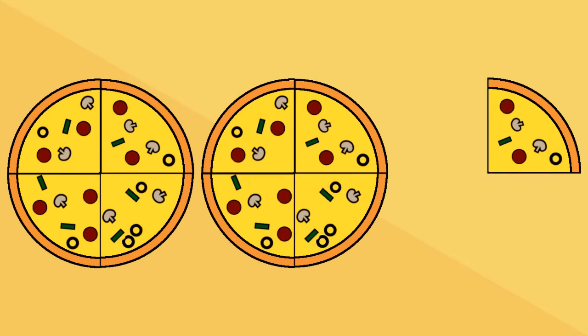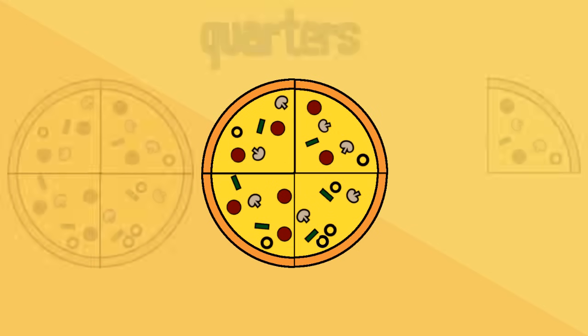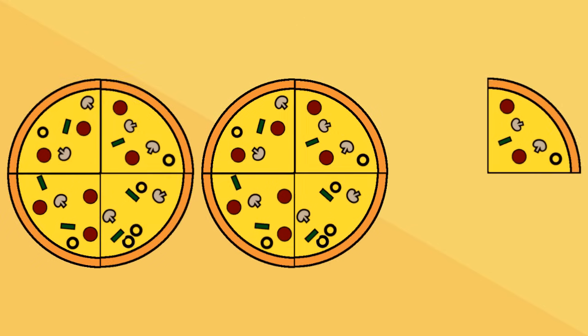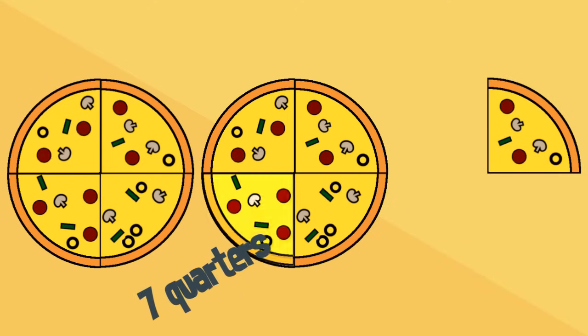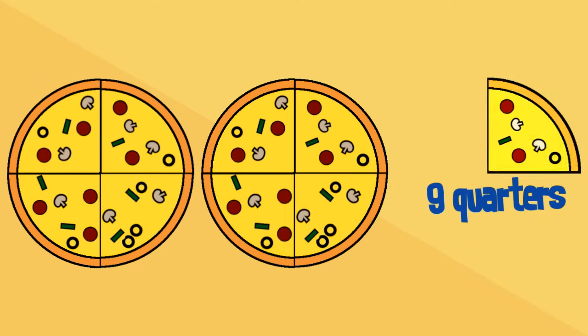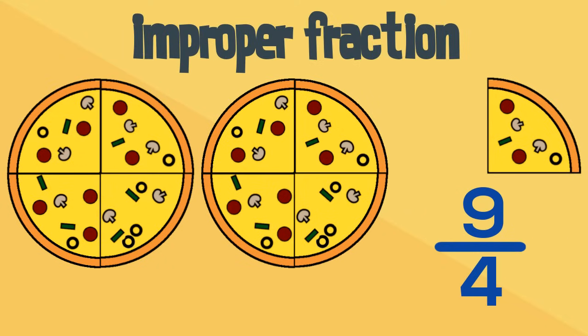One and a half is the same as three halves. Let's take a look at another example. What fraction have these pizzas been cut into? That's right, quarters. Let's count how many quarters we have: one quarter, two quarters, three quarters, four quarters, five quarters, six quarters, seven quarters, eight quarters, nine quarters. We have nine quarters. This is an improper fraction because the numerator is larger than the denominator.